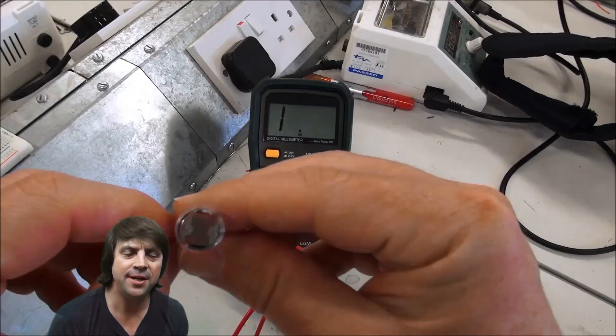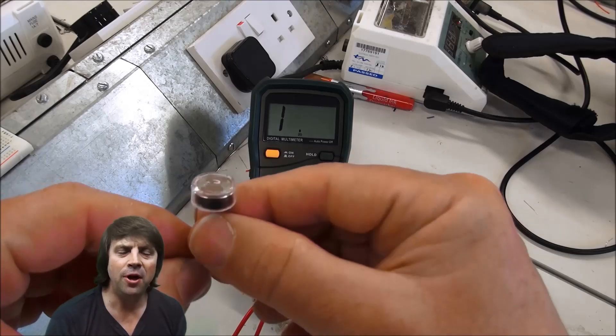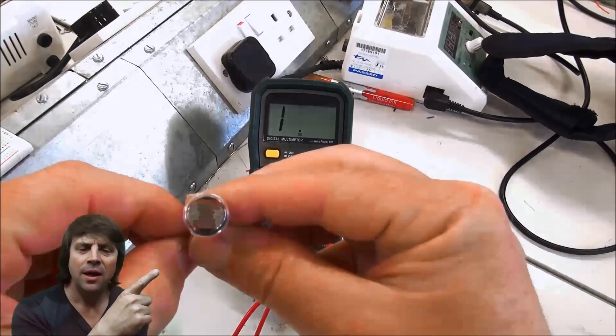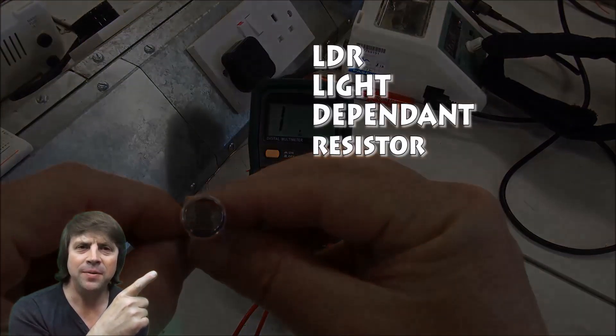In order to make a light sensor circuit we need something that can sense light, a component that can sense light. And the component I'm going to use is the LDR. LDR stands for light-dependent resistor.